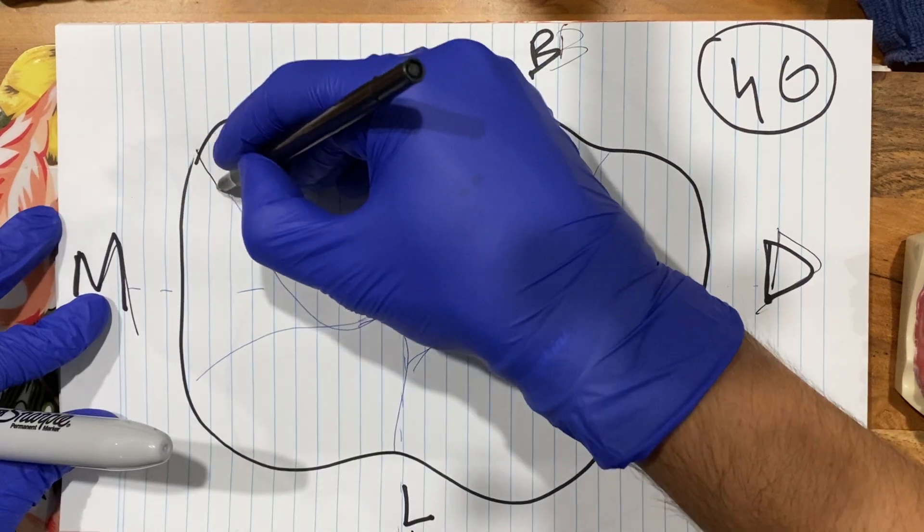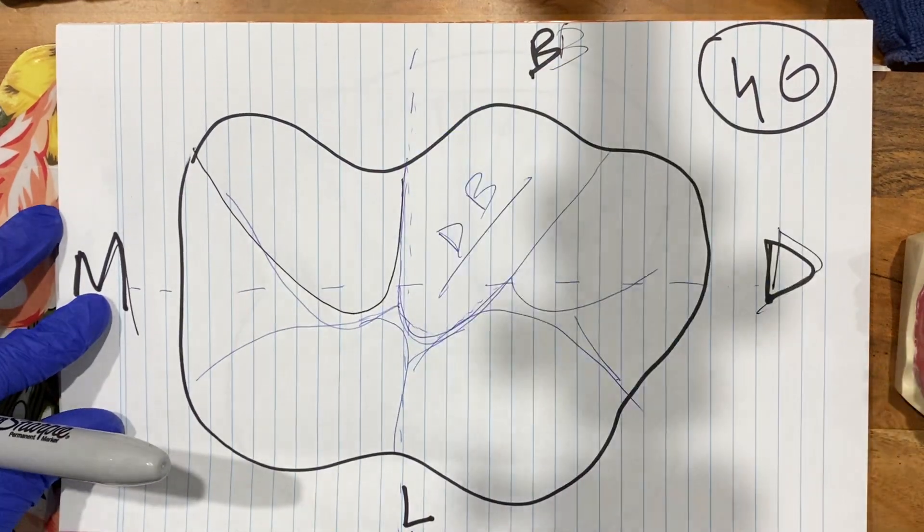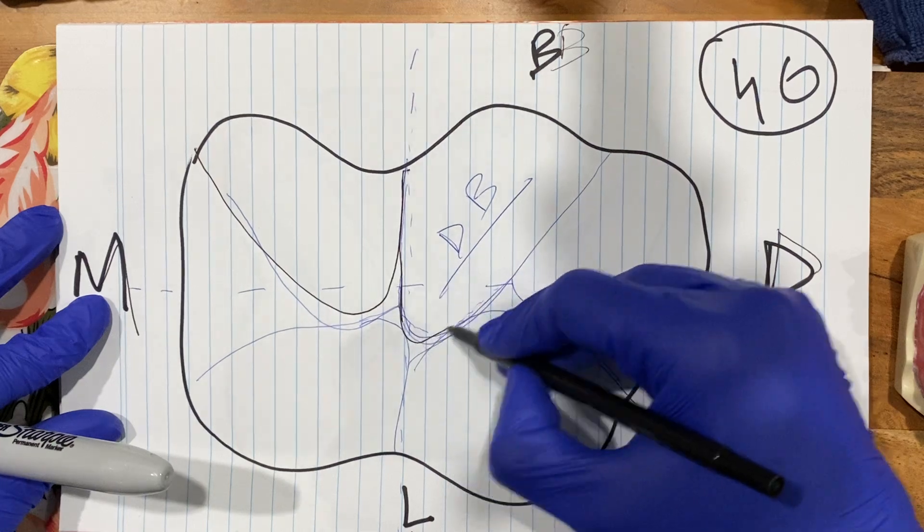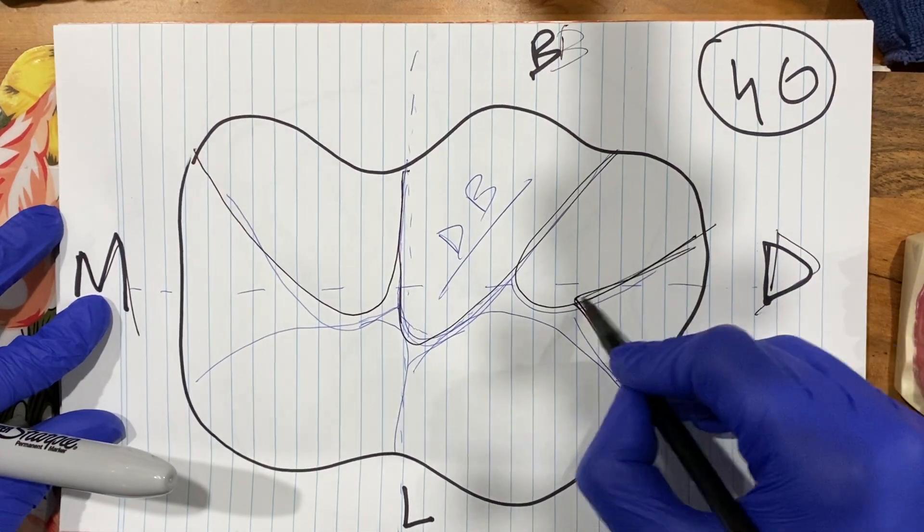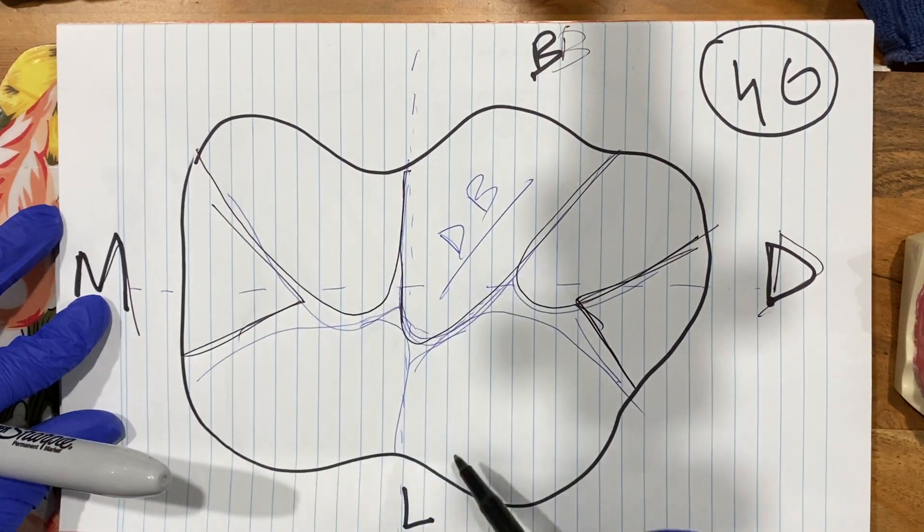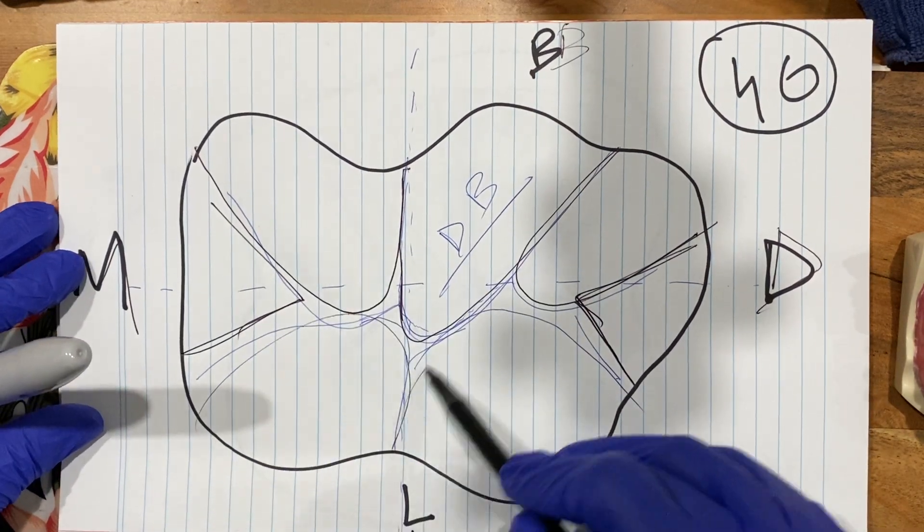So this is the mesial buccal, this is the distal buccal, this is the distal. This is the triangular fossa. Mesial lingual, distal lingual.